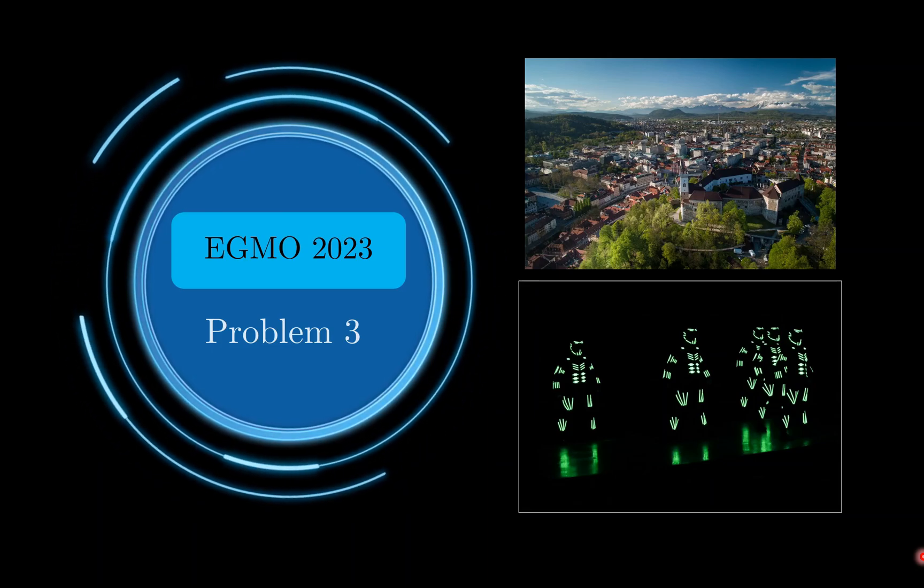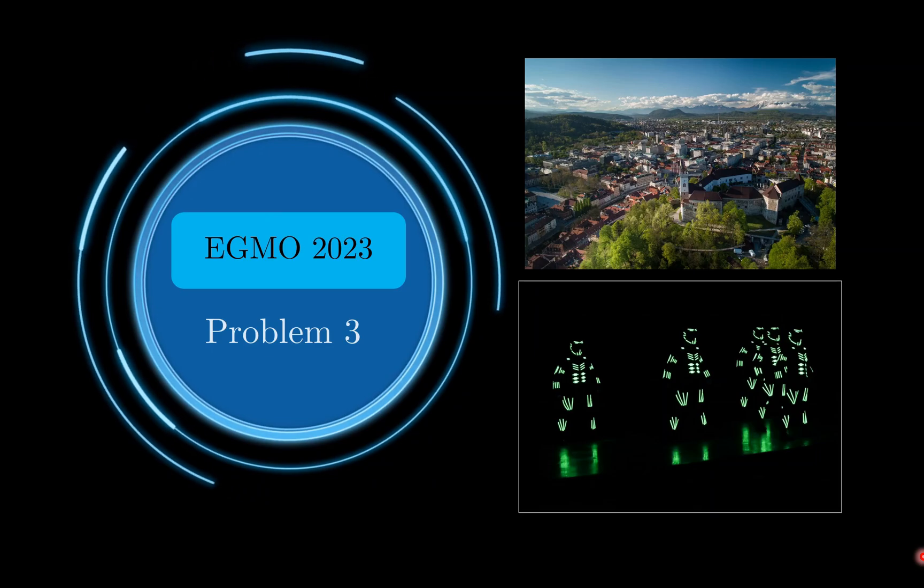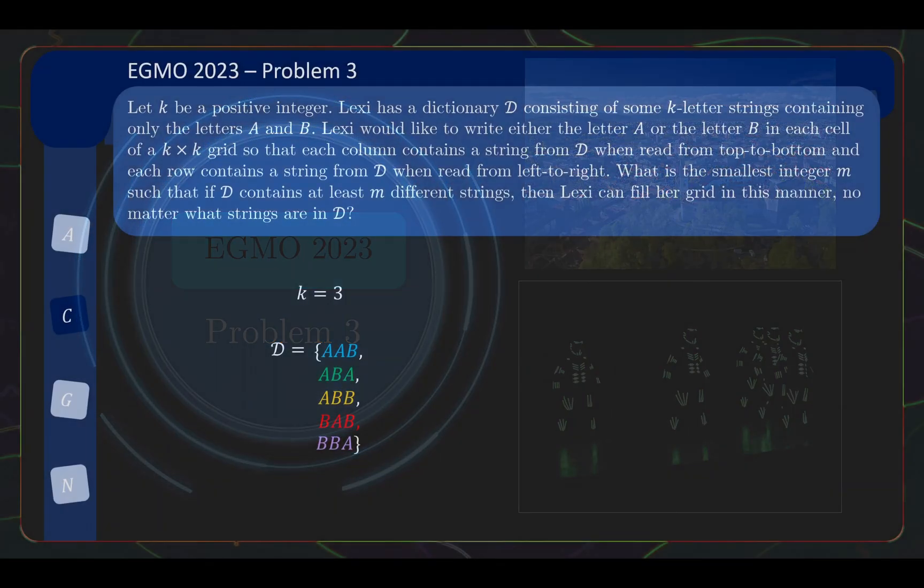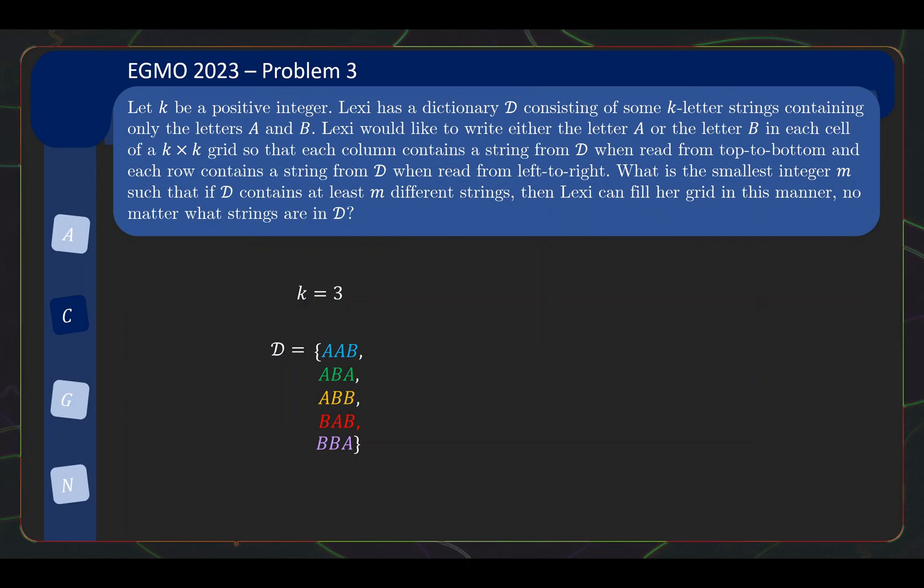So let's take a look at one of the problems from the Olympiad, which is problem 3 in this case. For problem 3 we have a combinatorics problem. The problem is as follows: Let k be a positive integer. So let's say k equals 3 for our illustration here. Lexi has a dictionary D consisting of some k-letter strings containing only the letters A and B. For example, D could look like this.